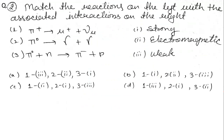Question number 2: match the reactions on the left with the associated interactions on the right. There are 3 reactions on the left side and 3 interactions on the right side, and we need to identify which reaction occurs through which process. First, let me tell you that Pi+, Pi0, and Pi− are the Pi mesons.